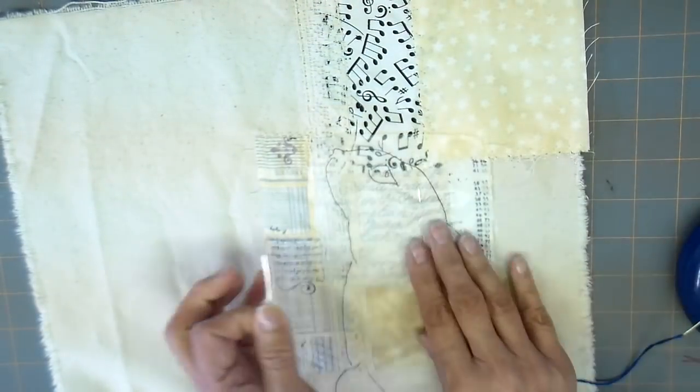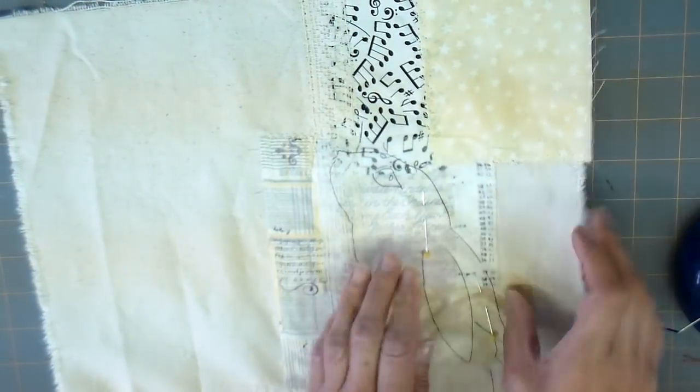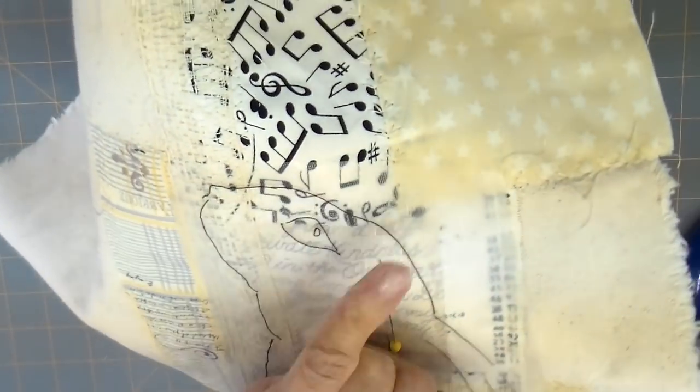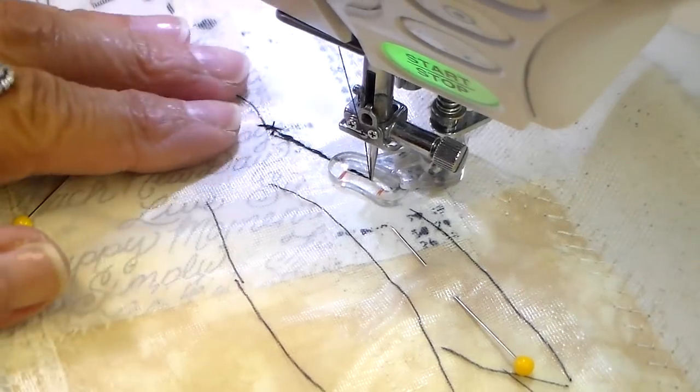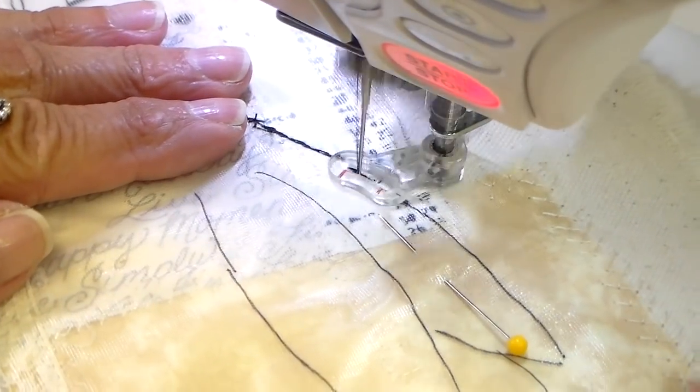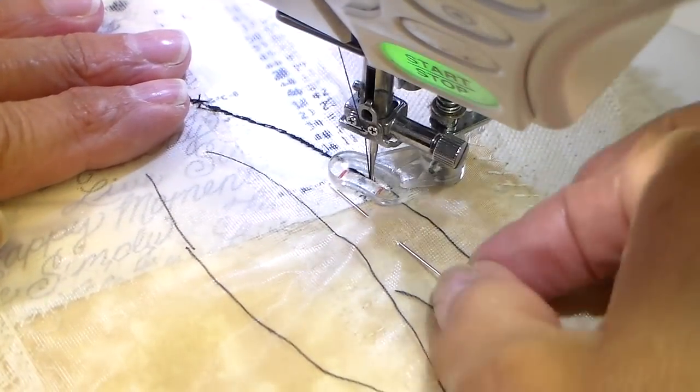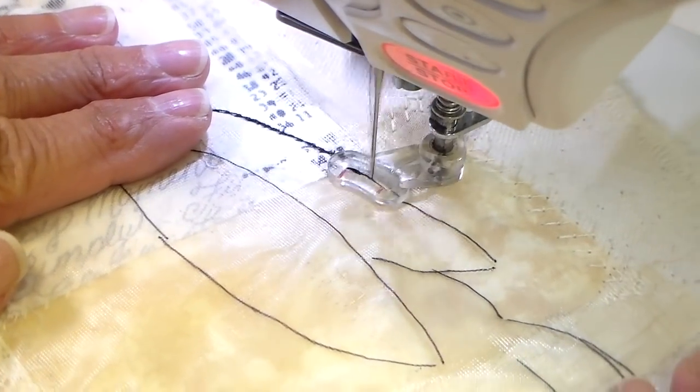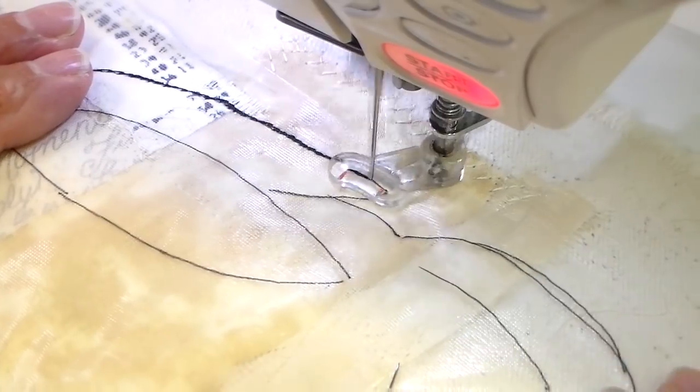Now I'm just laying that Sulky where I want my bunny and I'm just adding some pins here. I'll be taking this to my sewing machine and I'll be free motion stitching this outline on right over the top of that Sulky. I have my feed dogs dropped and I have my free motion foot on, and I have it set on a zigzag motion.